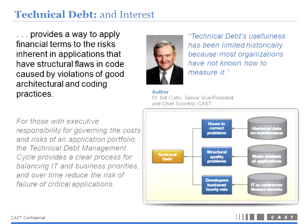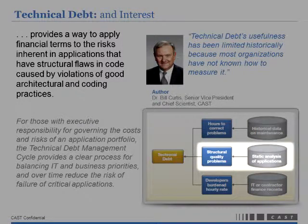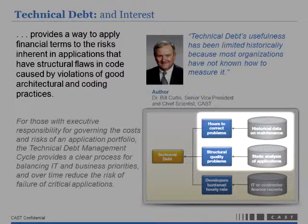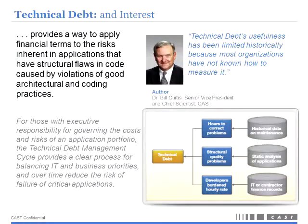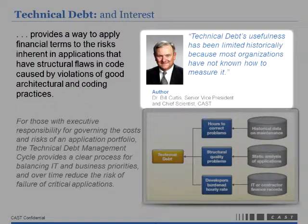Technical debt is a way to quantify all of the structural quality issues inside an application and express them in dollars. A simplified calculation: take all the structural problems you find, multiply by the hours it takes to correct those issues, then multiply by the hourly rate you'd pay a developer — whether offshore or onshore. That gives you the technical debt number. Just like real debt, if you don't do anything about it, it grows interest over time. This is a way for CIOs to communicate an issue that's very difficult to communicate. Bill Curtis, our chief scientist, is really going after quantifying this and getting this measurement in front of executives.